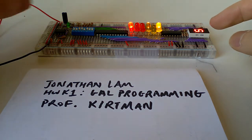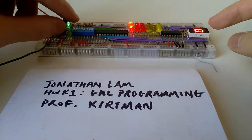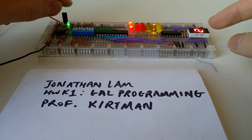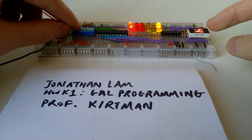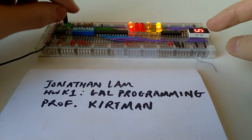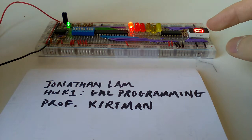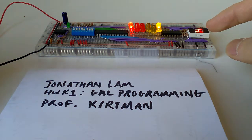This first input is A, second one is B, third one is direction, fourth one is enable, fifth one is clear, and sixth one is output enable. These last two are not connected to anything.